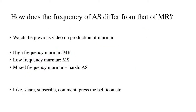Now that we've learned about ESM, how does the frequency of aortic stenosis differ from that of mitral regurgitation? Aortic stenosis gives rise to an ESM, but mitral regurgitation does not — it gives rise to a pansystolic murmur. To summarize: a high-frequency murmur is produced by mitral regurgitation, a low-frequency diastolic murmur is produced by mitral stenosis, and a mixed-frequency harsh murmur is produced by aortic stenosis. As always, like, share, subscribe, comment, and press the bell icon — see you next time.